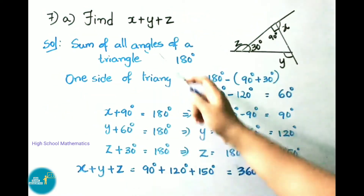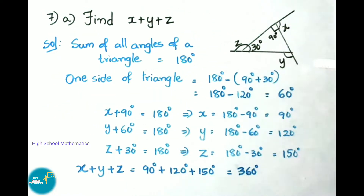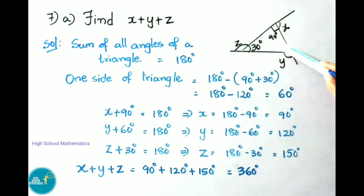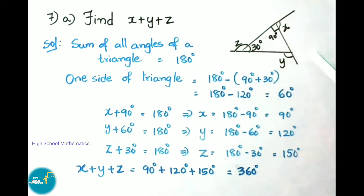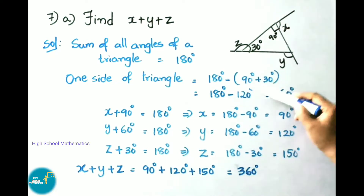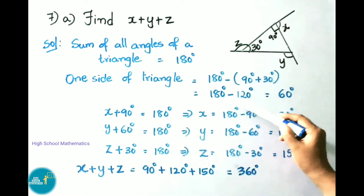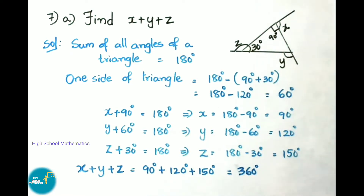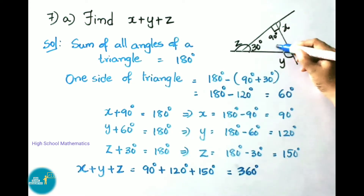See now question number 7: find x + y + z. Observe the given figure. The angles given are 90 degrees, 30 degrees, and one unknown interior angle, while x, y, and z are exterior angles. Since the figure is a triangle, the sum of all angles is 180 degrees. The third interior angle = 180 - (90 + 30) = 180 - 120 = 60 degrees.